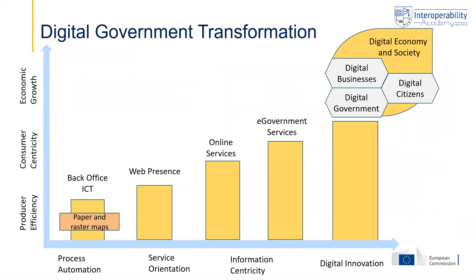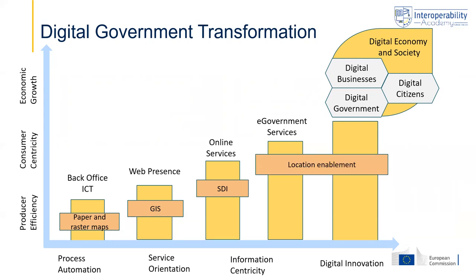This figure summarizes the course, showing the transformation toward digital government. Importantly, we can add the location dimension to this picture — seeing not only an evolution from back-office ICT, through web presence, online services, and e-government, toward digital government, but also linking these evolutions with the evolution in how governments deal with location data: from paper and raster maps, to GIS systems, spatial data infrastructures, location enablement, and ultimately to a location-intelligent digital government where location is an inherent element of government functioning.